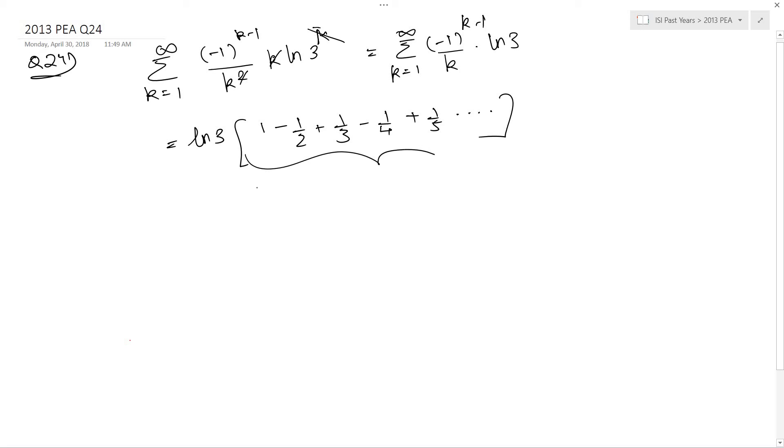Now, this sequence is actually equal to ln 2. Again, we are using Taylor expansion here, which is something you are not expected to know anymore. In the old format, ISI used to ask questions from Taylor expansion. Now they no longer ask it.